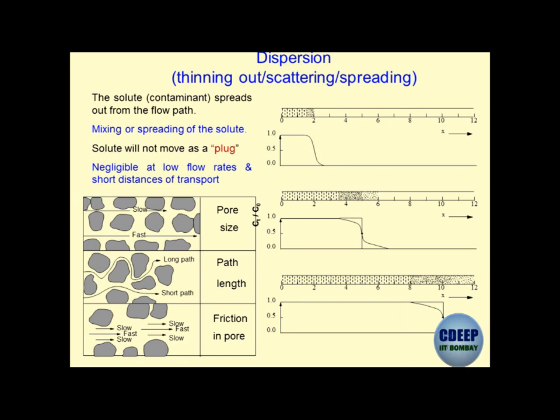Fortunately, in systems like compacted clays, the seepage velocity itself is extremely low - 10 to the power minus 11 meter per second is the hydraulic conductivity for compacted clays. So we are lucky that we need not deal with dispersion much. Normally we ignore dispersion because of very low Reynolds numbers and very low seepage velocities. We can very easily assume that in clay systems, dispersion is not going to occur. Advection is also not going to occur. So what is going to occur? Diffusion.